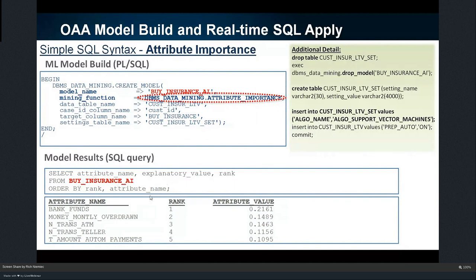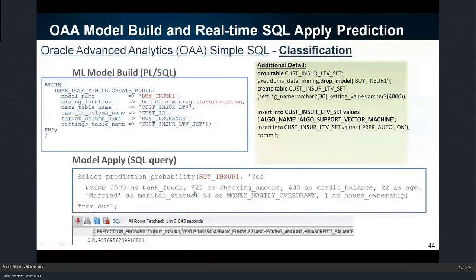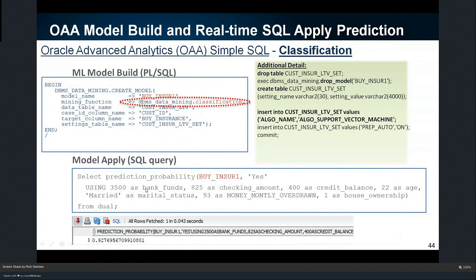A lot of this is SQL. I go to the model I built and ask: what are the most important attributes? The answer for customers buying insurance — the most important thing was bank funds. Who would have thought? They need to have money. But there are other things as well. Going one step further, now I know which attributes are important, so let's do classification — I want to see if they'll actually buy the insurance. I enter values for bank funds, credit balance, marital status, and it tells me the probability they'll buy. Then I use those attributes to classify a list of big data to see which customers will buy, so I don't waste my salespeople's time going after the wrong customers.